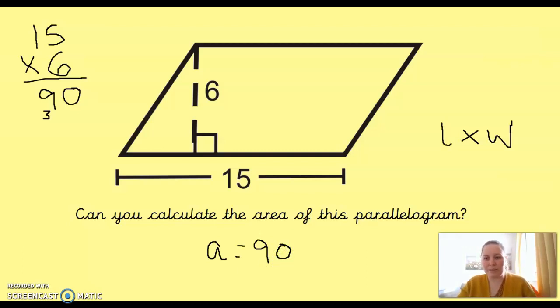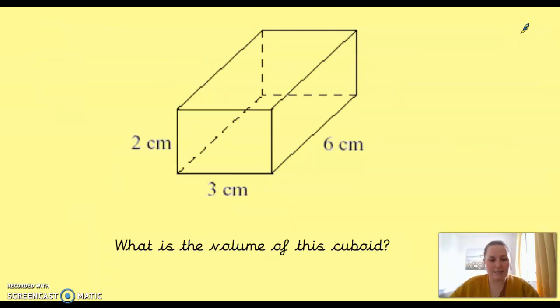Right, last thing that we looked at then, this was in yesterday's lesson, so it's our most recent recap. Volume. Now, remember, area and perimeter were for 2D shapes, flat shapes, whereas volume is about 3D shapes.